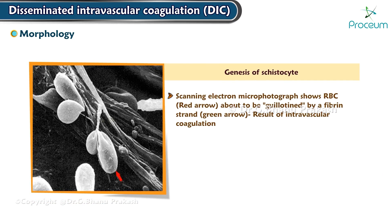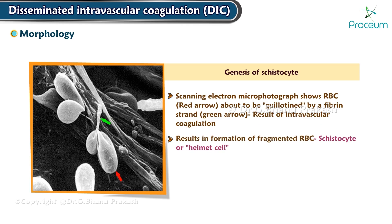This scanning electron microscope image shows a red blood cell about to be guillotined by a fibrin strand produced as a result of intravascular coagulation. This results in the formation of a fragmented red blood cell termed a schistocyte or helmet cell.